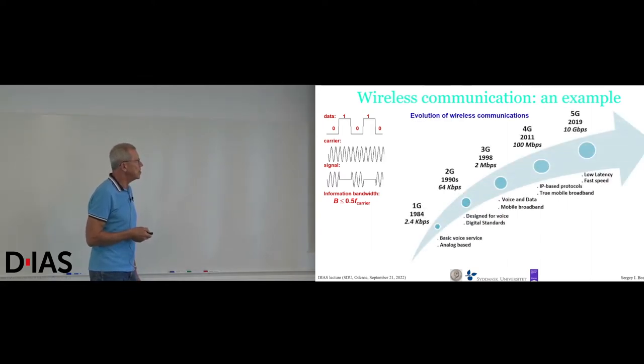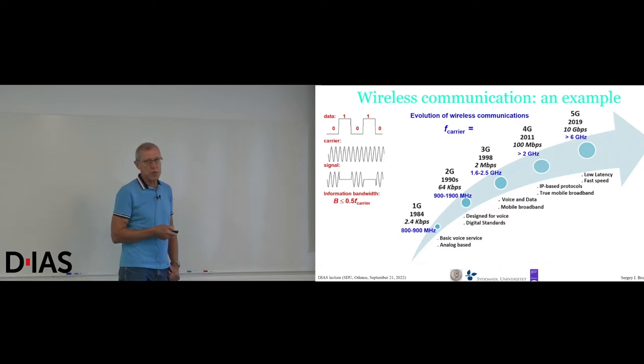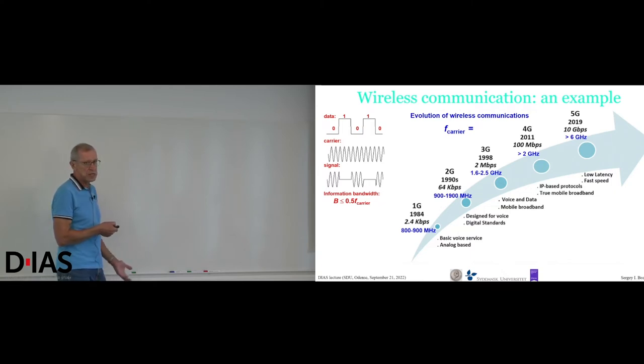Just to illustrate this with the evolution of wireless communications. So you can see here how the wireless communication progressed from the year of 1984 when we had 1G band to the current 5G band transmissions. And you can see the information that we have been sending from 2.4 kilobytes per second to up to 10 gigabyte per second. And then, of course, we had different possibilities to send it. But to understand why this increase of the bandwidth was possible, we should just show what happened to the carrier frequency.